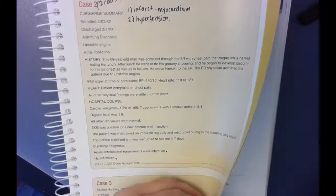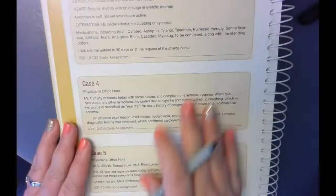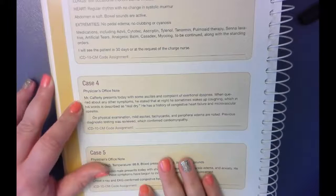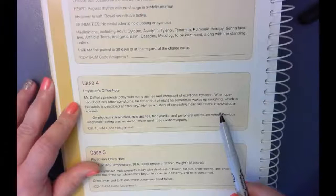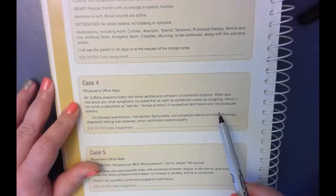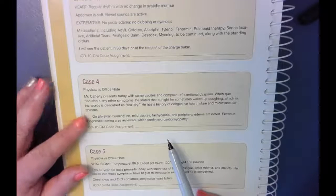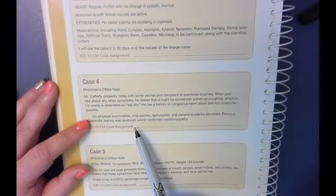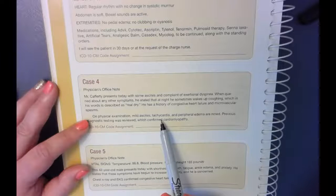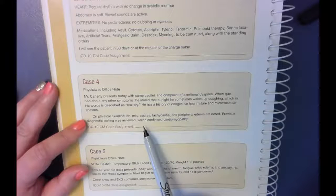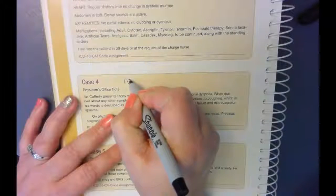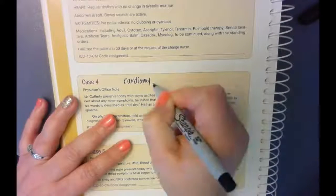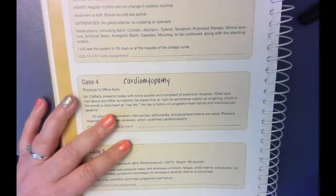For case four, let's see what case four is about. Physician's office note. History of congestive heart failure and microvascular spasms on physical exam. He has mild ascites, tachycardia, peripheral edema. Those are all noted. Previous diagnostic testing was reviewed, which confirmed cardiomyopathy. So that's what you're going to look up here. It's going to be one code and you're going to look up the cardiomyopathy.